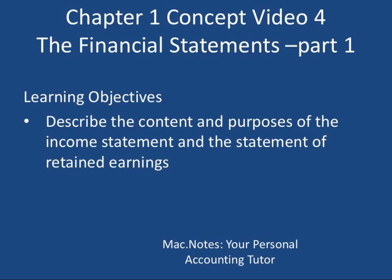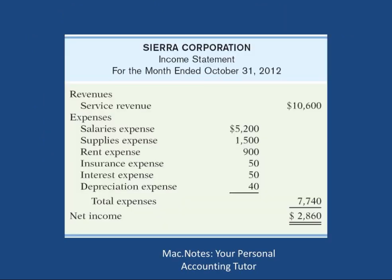Now we are going to look at financial statements. This is the fourth video in chapter one. We're going to look at the income statement and the statement of retained earnings. These are formal financial statements, meaning they are presented in this format by all accountants all around the world — everyone follows the same rules. You start with the name of the company, Sierra Corporation, and the name of the statement: income statement.